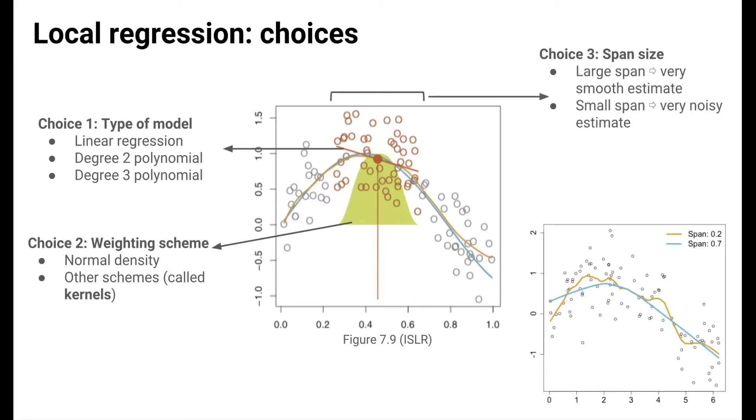The third choice, and by far the most important choice, is the size of the span that determines what points are nearby to the target point. With a large span, the estimate of the function at each point is determined by a large portion of the data, so the estimated function is smooth. This is illustrated on the figure in the bottom right with a smooth blue line. The span of 0.7 means that 70% of the data are used for each local fit.